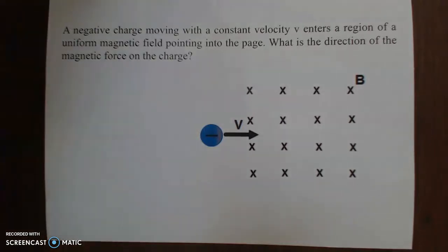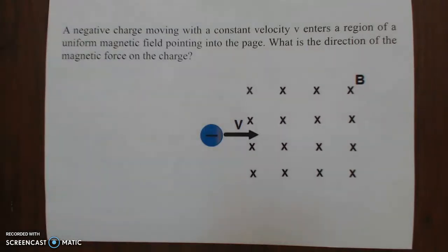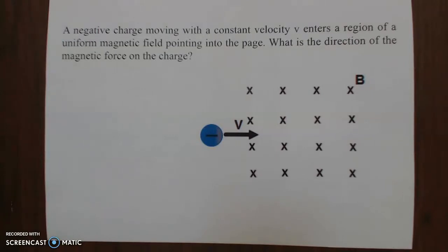So we have this example to apply: a negative charge moving with a constant velocity enters a region of a uniform magnetic field pointing into the page. What is the direction of the magnetic force on the charge?